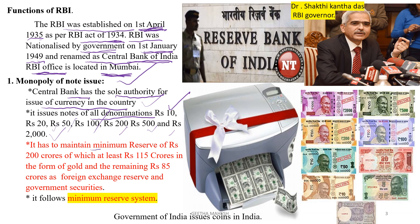RBI has to maintain a minimum reserve of 200 crores, of which at least 115 crores should be in the form of gold. The remaining 85 crores has to be in the form of foreign exchange reserves and government securities. This is the minimum reserve system that Indian RBI follows.